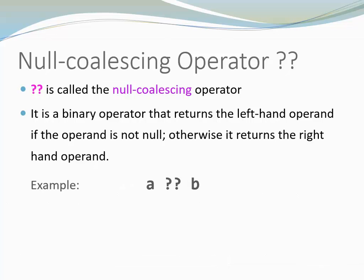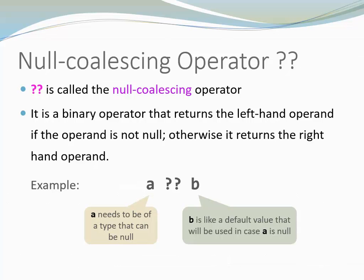Here is an example. I could say a question mark question mark b. This expression will evaluate to a if a is not null. Otherwise, it will evaluate to b. It is important that a is a type that can be null. And b is like the default value that is used in case a was null. So if a didn't have a value, then we are using b instead.